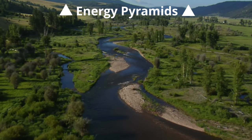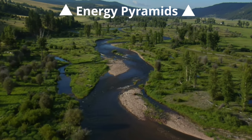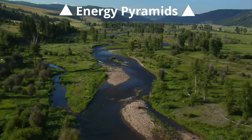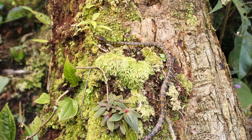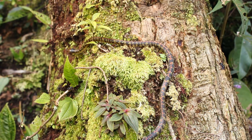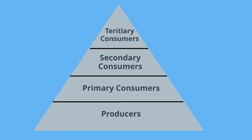Every day in nature, energy is being transferred. Energy from the sun is transferred to plants, and then insects may receive energy from the plants, and then a snake may receive energy from an insect. An energy pyramid is a display of energy flow in a community. The different levels represent different groups of organisms and where they receive energy.